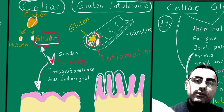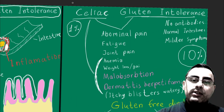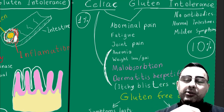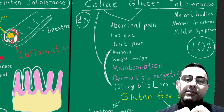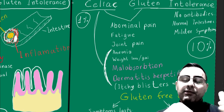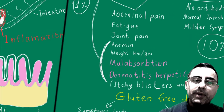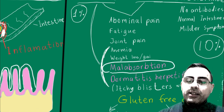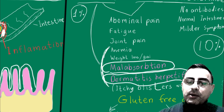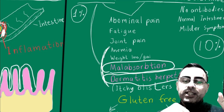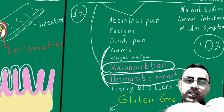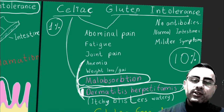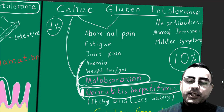Gluten intolerance can also have serious implications. Both conditions have similar symptoms: abdominal pain, abdominal discomfort, bloating, diarrhea, constipation, fatigue, joint pain, anemia, and weight loss — sometimes weight gain. In the case of celiac disease, malabsorption is more common. Dermatitis herpetiformis — small, itchy, watery blisters on the skin — is a characteristic of celiac disease. For gluten intolerance, symptoms like malabsorption and dermatitis herpetiformis are less likely.